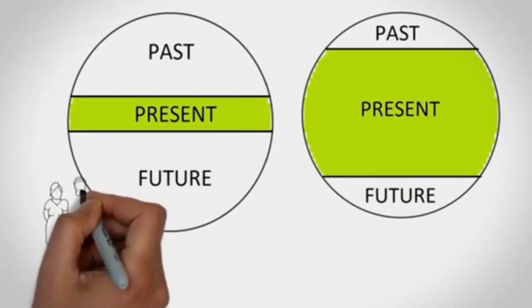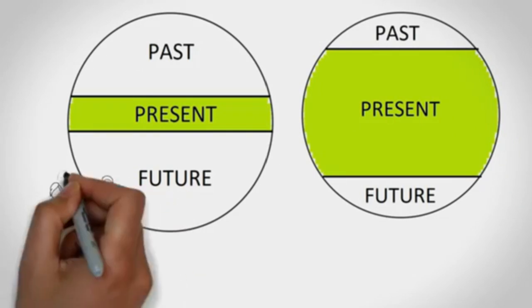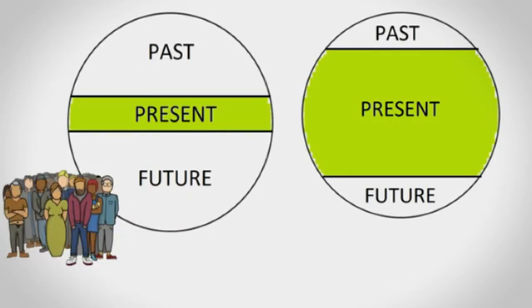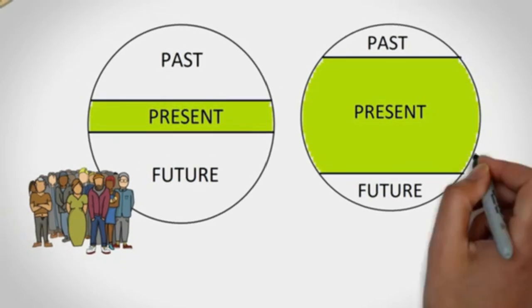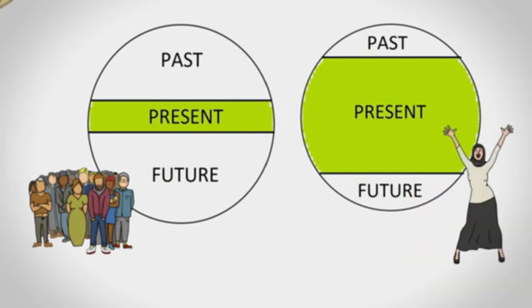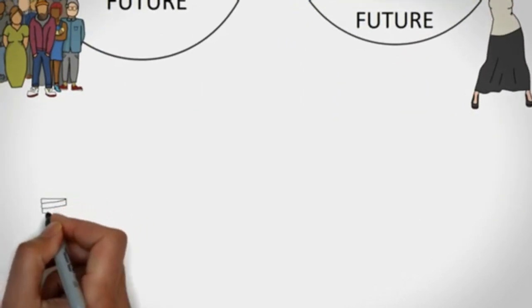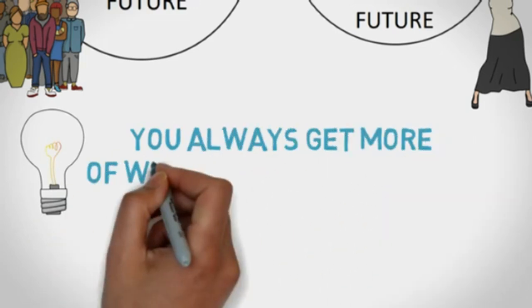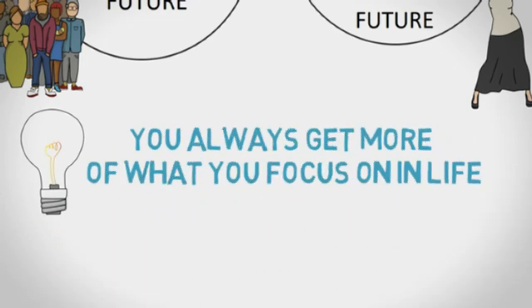Now have a look at these two circles. Most people are like the first one. They focus more on the past and the future and ignore the present. The very few and fortunate are like the second one. Here you will get more out of yourself and your life on a daily basis. Just remember this key principle. You always get more of what you focus on in life.